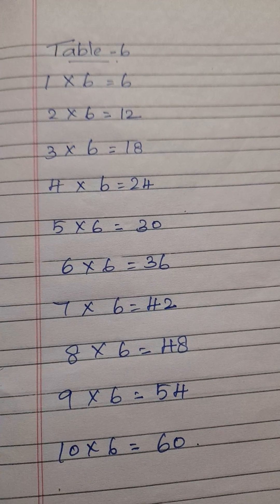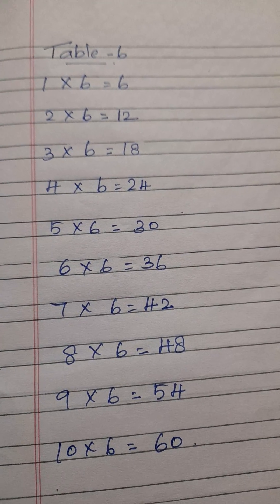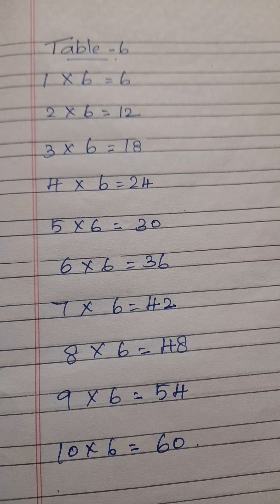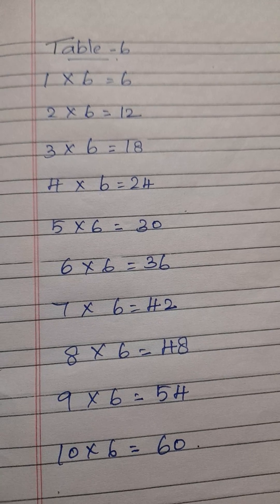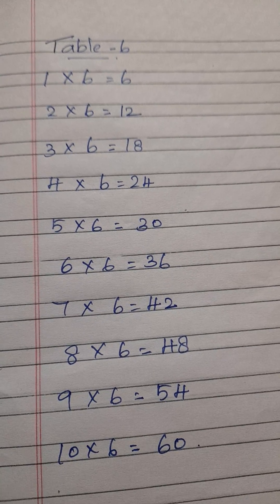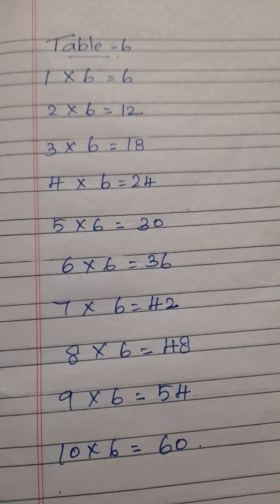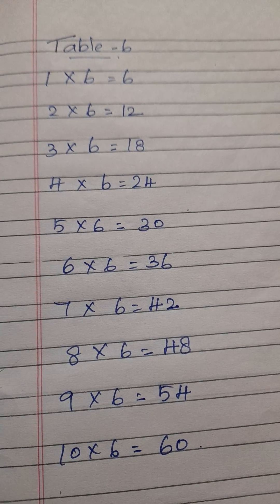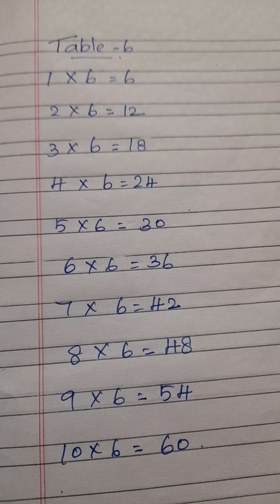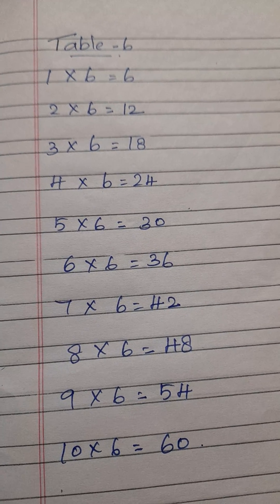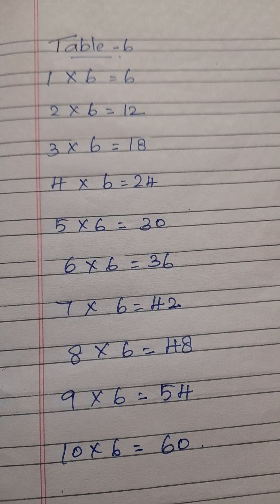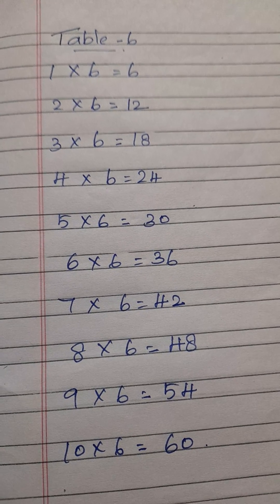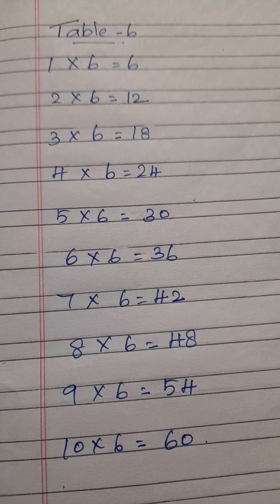Table 6. 1×6 is 6. 2×6 is 12. 3×6 are 18. 4×6 are 24. 5×6 are 30. 6×6 are 36.